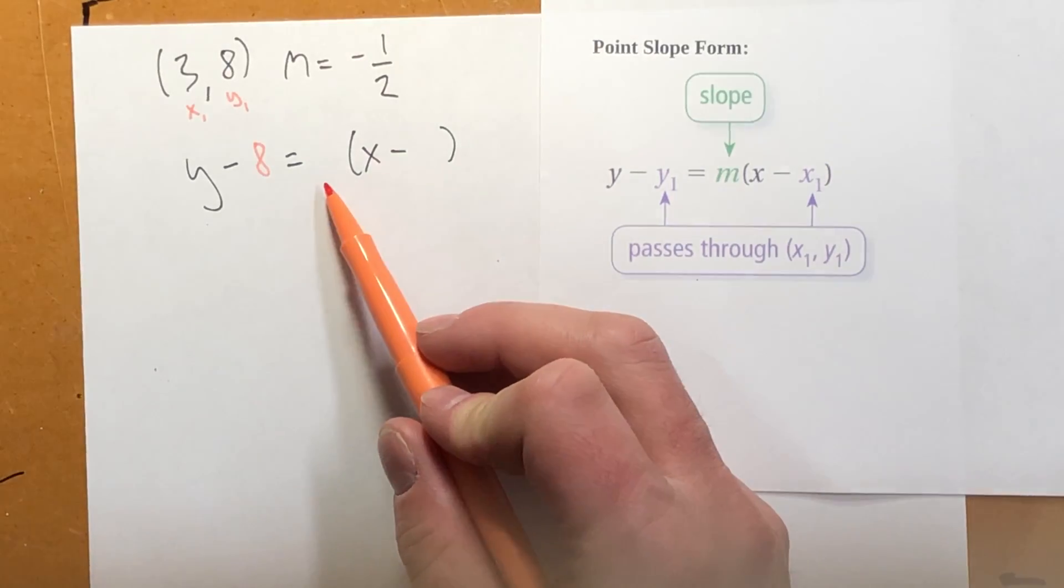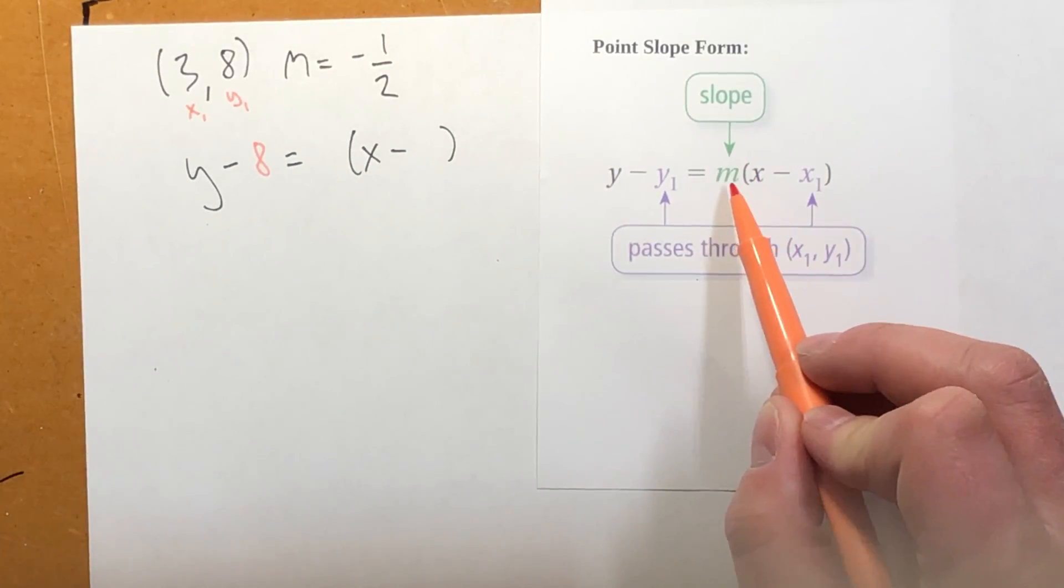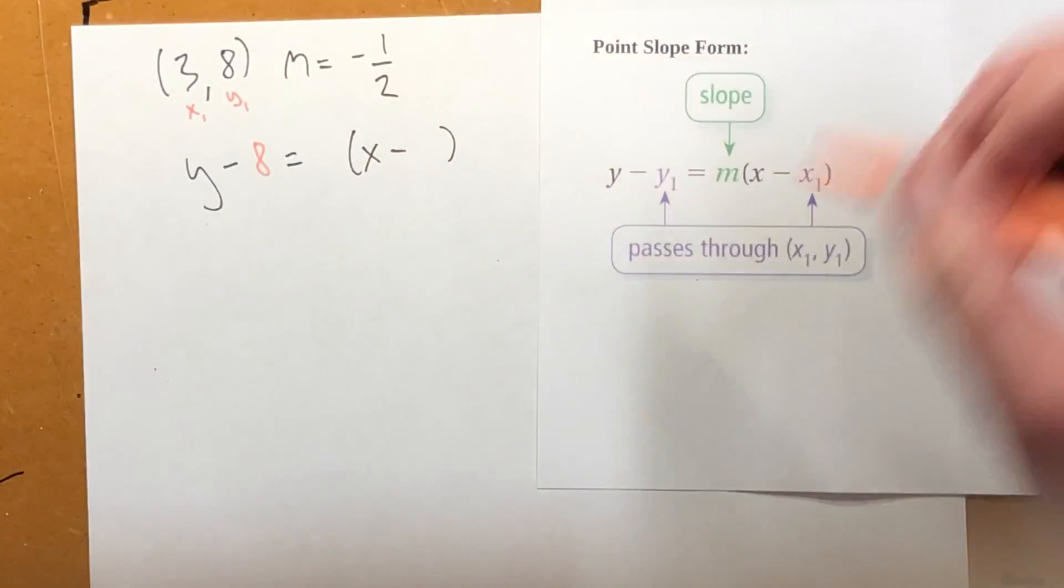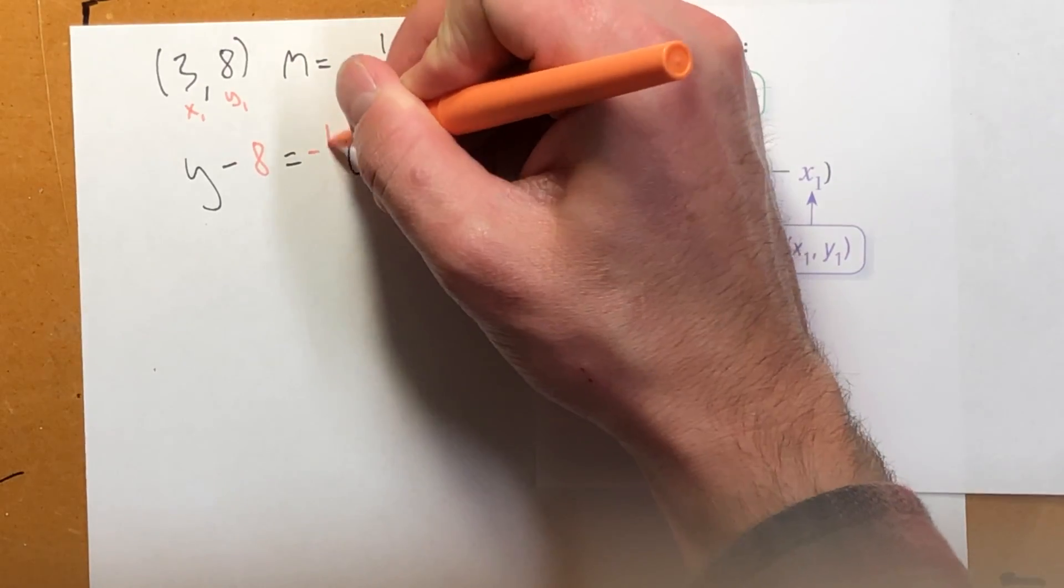Now this next blank, that's my slope. In this case, the slope is negative 1 half.